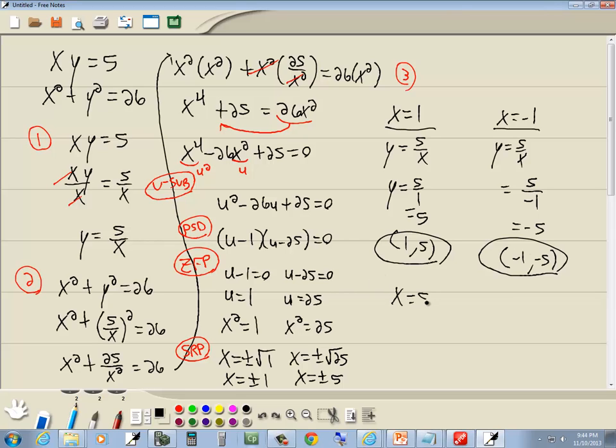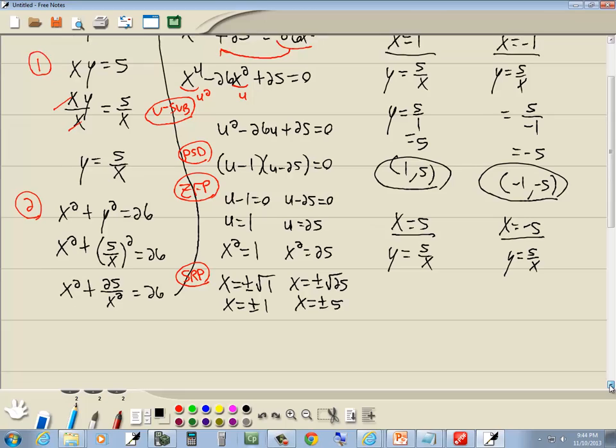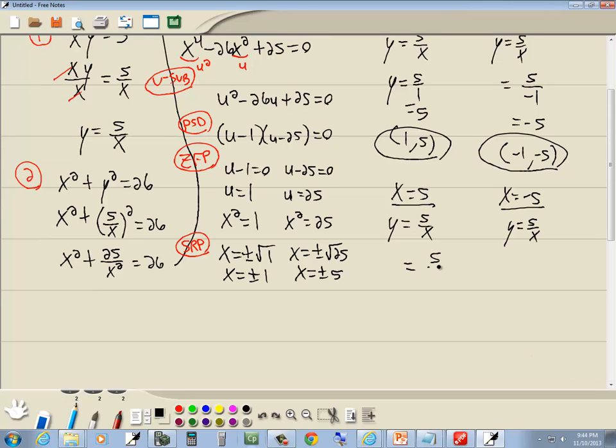Now, we also want to plug in x equals 5, and x equals negative 5, into y equals 5 over x. So here we have 5 over x, which we said was 5. So 5 over 5 is 1. So this answer will be 5, 1. This one, I'll plug in a negative 5 for the x. So I've got 5 over negative 5, which gives us negative 1. So this answer will be negative 5, negative 1. And those will be your other two answers. So those are our four answers.